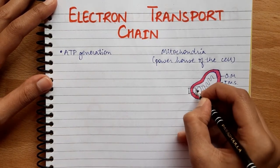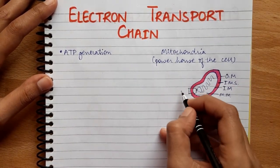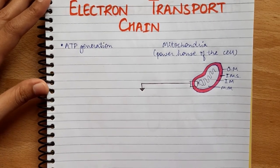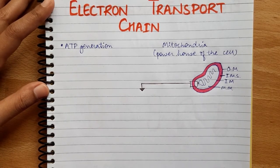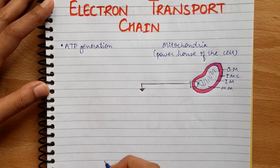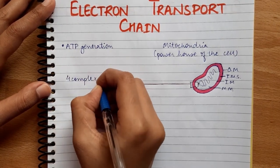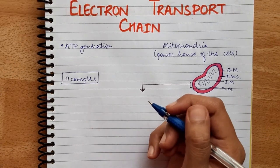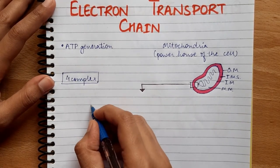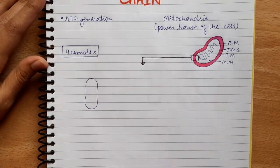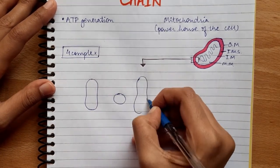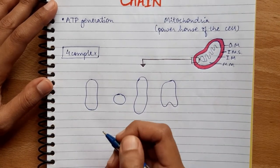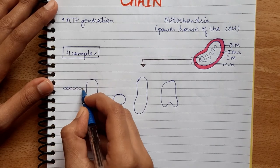If I zoom in and show this part, here is where we get our electron transport chain, which mainly consists of four complexes. There is a fifth complex, but that is not particularly included in the electron transport chain itself. All four complexes are found on the inner mitochondrial membrane.